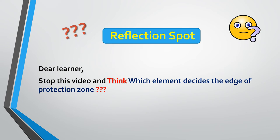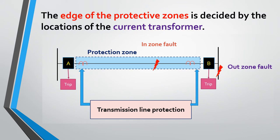Stop the video and think: which element decides the boundary of protection zones? You are now familiar with the term protection zone and the concept of blind spot or dead spot. The boundary of the protective zones is decided by the location of the current transformer.